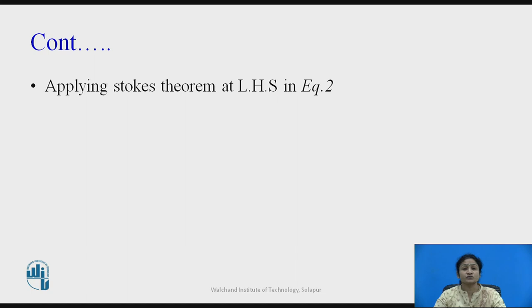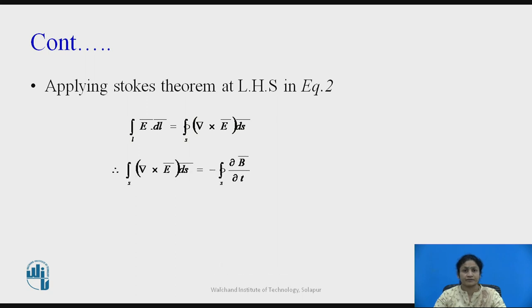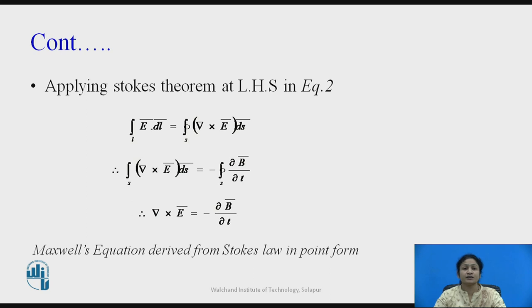When we apply Stokes' theorem to the right-hand side of equation 2, the integral of E·dl is replaced by del cross E-bar over the surface. When we equate both sides with respect to the surface, this reduces to: del cross E-bar equals minus ∂B/∂t, which is Maxwell's equation derived from Stokes' theorem in point form.